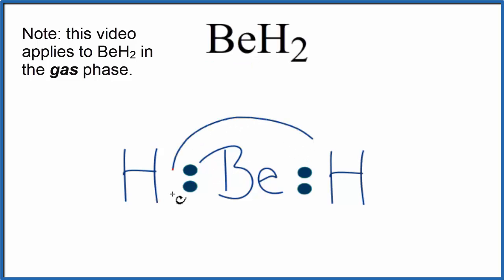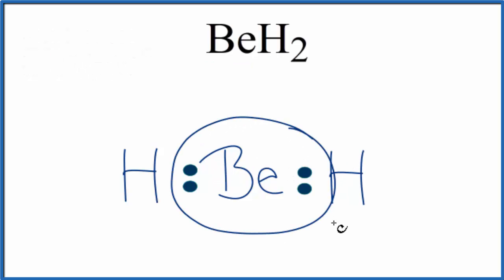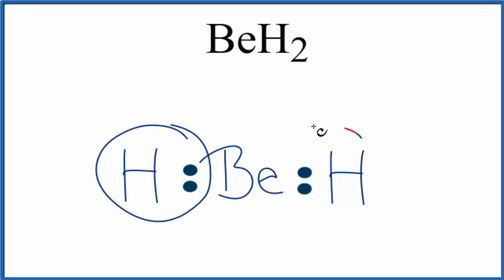And you'll notice right away that beryllium doesn't have an octet. That's okay, beryllium's an exception, it can have just four valence electrons. Hydrogen, too, is an exception, it's okay with two valence electrons.